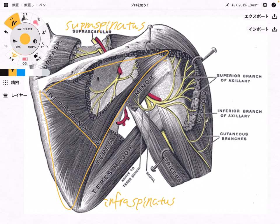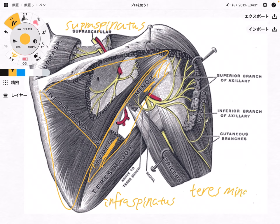Then one more rotator cuff muscle we see in this picture — teres minor. You don't see the last rotator cuff muscle in this picture. By the way, it is subscapularis. Subscapularis is on the anterior part of the scapula, that's why you are not able to see it here.